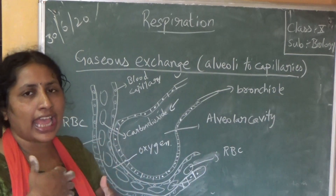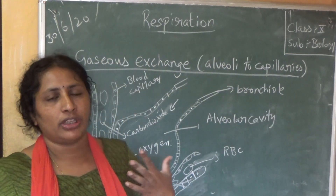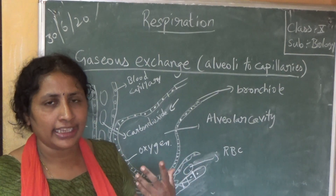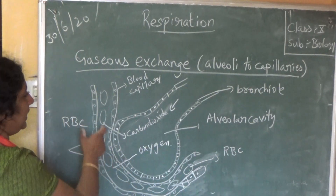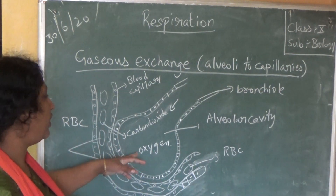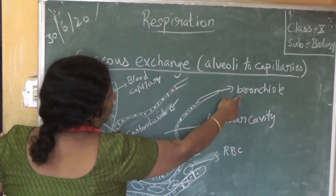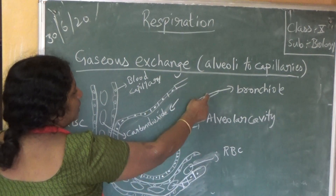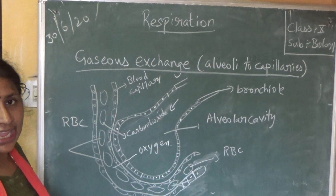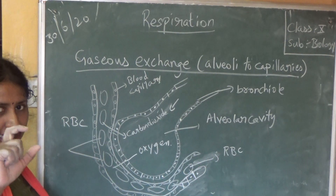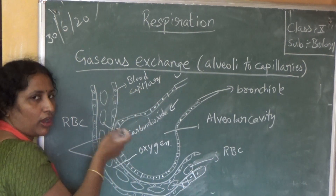Now the alveoli are covered by blood capillaries — each alveolus is surrounded by blood capillaries. If you see the structure, this is one alveolus. This is the bronchiole, and this is the alveolus — a small grape-like structure which we call alveoli.